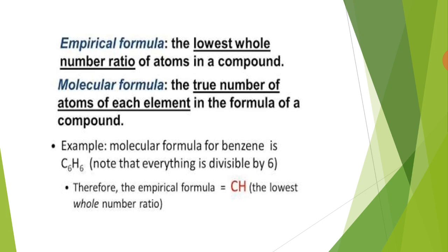Let us consider the example of benzene. The actual ratio of carbon to hydrogen atoms in a molecule of benzene is 6:6, hence its molecular formula is C6H6. Note that everything is divisible by 6. Therefore, the empirical formula is CH, which shows the lowest whole number ratio.